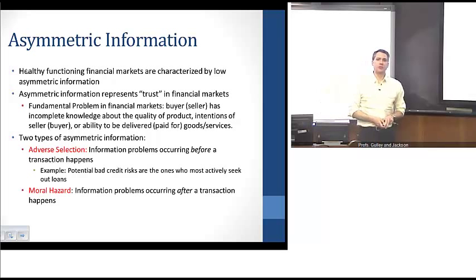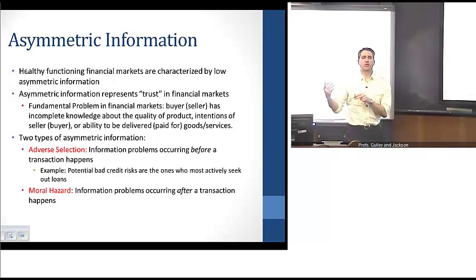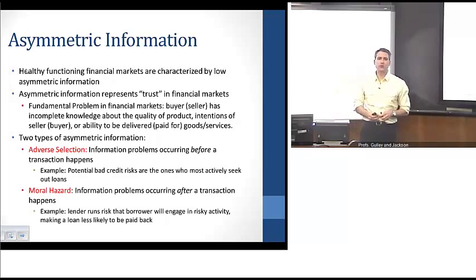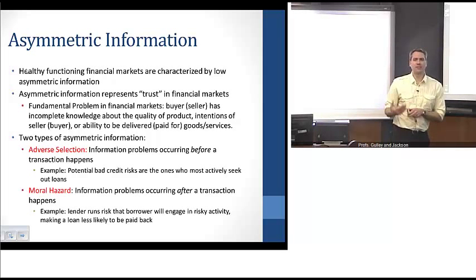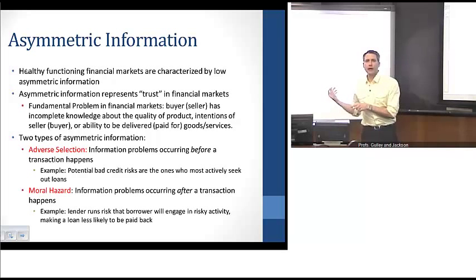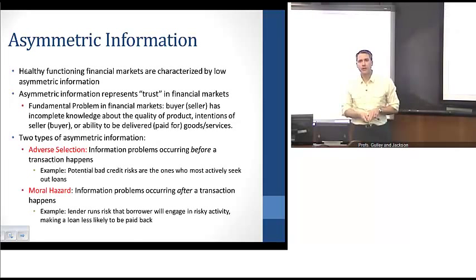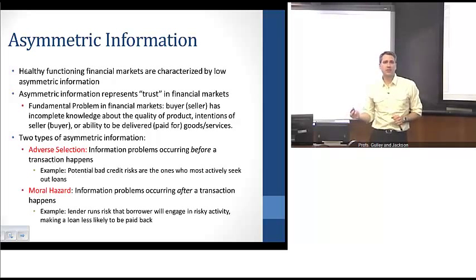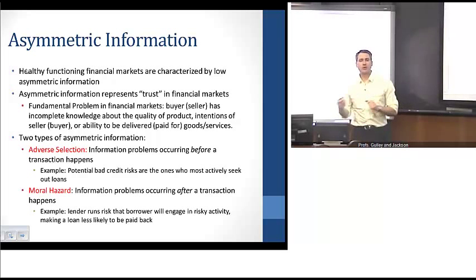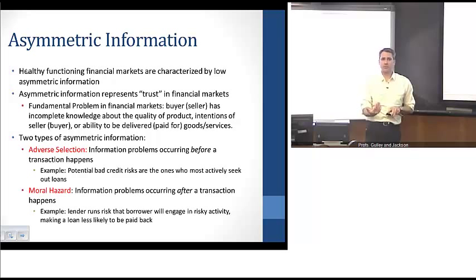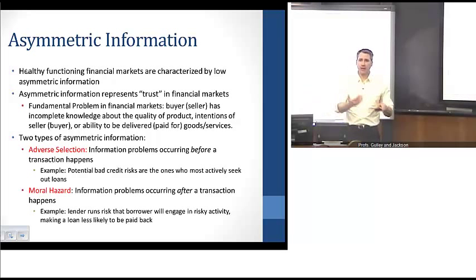The second piece is moral hazard — information problems occurring after the transaction occurs. With moral hazard, the lender can't perfectly monitor the activities of the borrower. Because the borrower may be desperate — they're borrowing money for a reason — they could pursue risky activities to try for a high-risk but high-reward outcome. Through this moral hazard situation, borrowers are more likely to engage in riskier activities, which the lender doesn't want because they want to get paid.